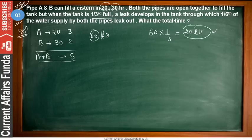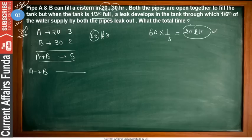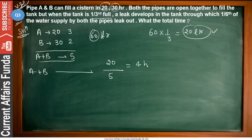After the leak develops, the first 20 liters have already been filled. A + B with efficiency 5 take 20 ÷ 5 = 4 hours to fill that first 20 liters. After the leak develops, the remaining capacity is 60 − 20 = 40 liters.